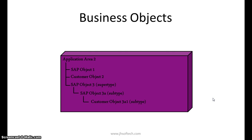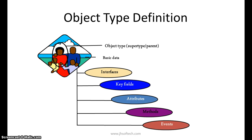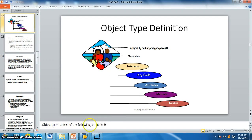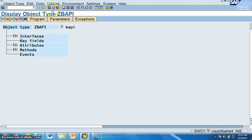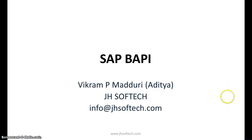Next we have business objects. We can see a list of all business objects in the BAPI transaction, which I will show on the server. When we get into the SW01 transaction and into the creation of a business object, we will see options for interfaces, key fields, attributes, methods, and events. I will demonstrate when I display an object in SW01 — you will have interfaces, key fields, attributes, methods, and events, which we will discuss in detail in the following slides.